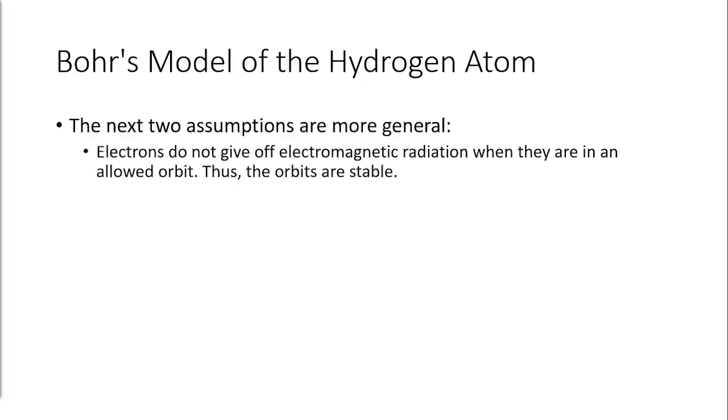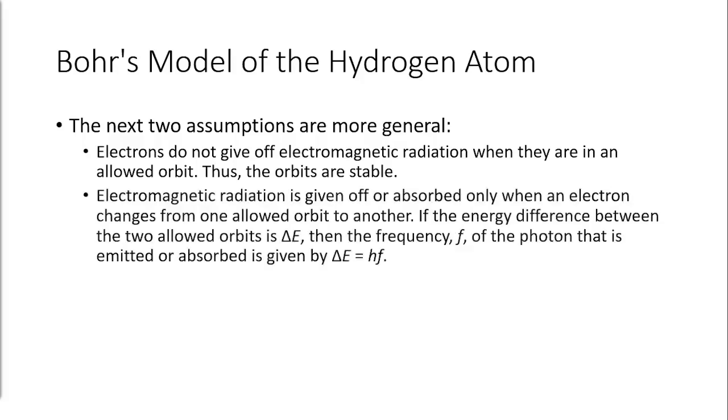The next two assumptions are more general. Electrons do not give off electromagnetic radiation when they are in an allowed orbit. Thus the orbits are stable. Electromagnetic radiation is given off or absorbed only when an electron changes from one allowed orbit to another. If the energy difference between the two allowed orbits is delta E, then the frequency f of the photon that is emitted or absorbed is given by delta E is equal to hf.